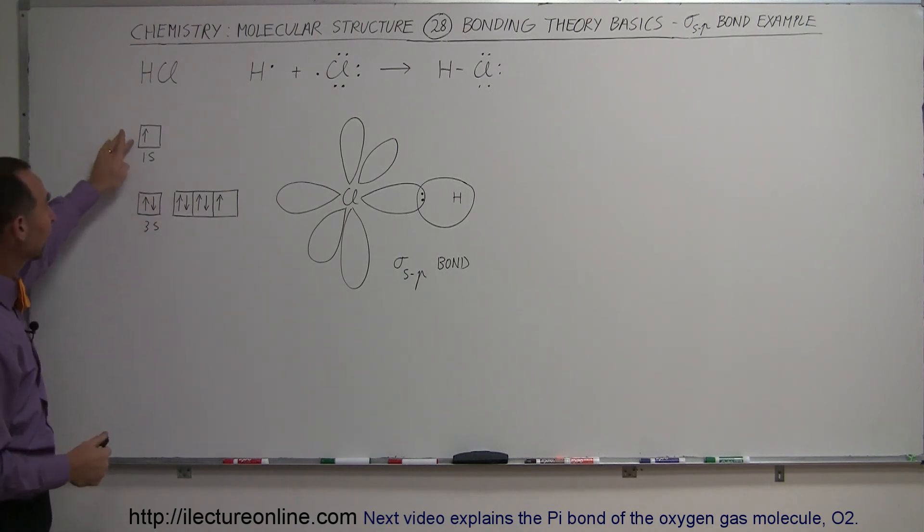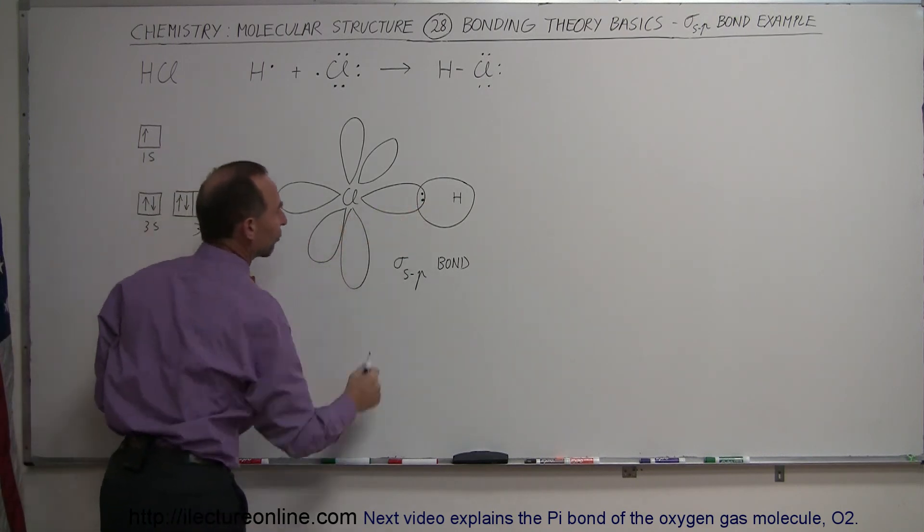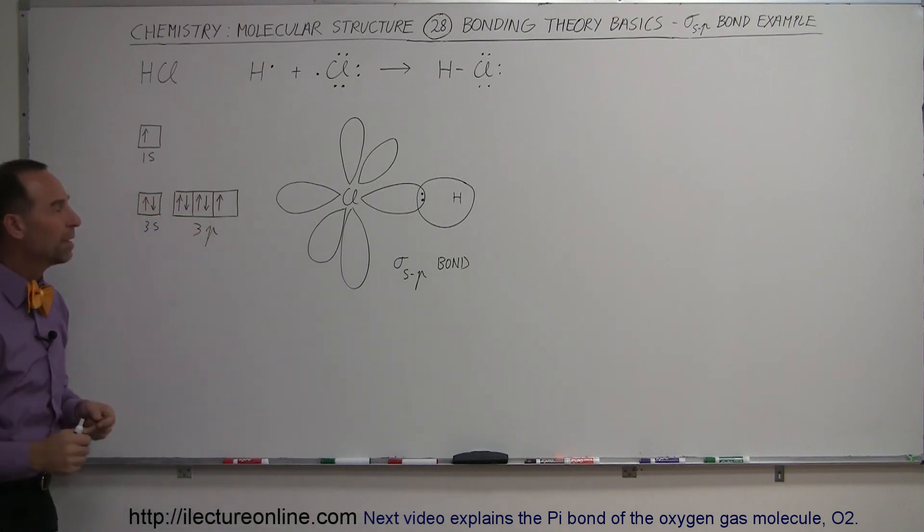And obviously, we're bonding an s orbital to a p orbital. This is a 3p orbital right here. And so this is therefore called a sigma sp bond or the sigma that would be the s orbital and p orbital bond. That's how you do that.